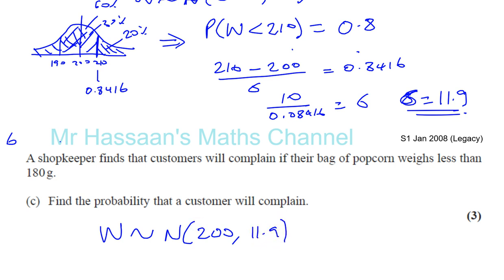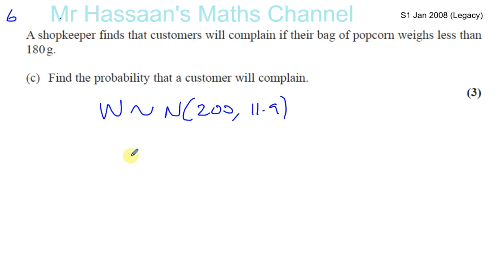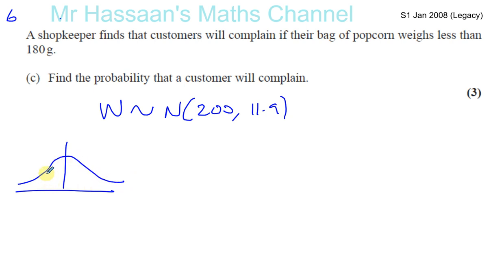A shopkeeper finds that customers will complain if their bag of popcorn weighs less than 180 grams. So we have 180 grams on the left of the mean of 200, and if it's in this region the customers will complain. We've got to find the probability that customers will complain, so we need to find the area of that region.